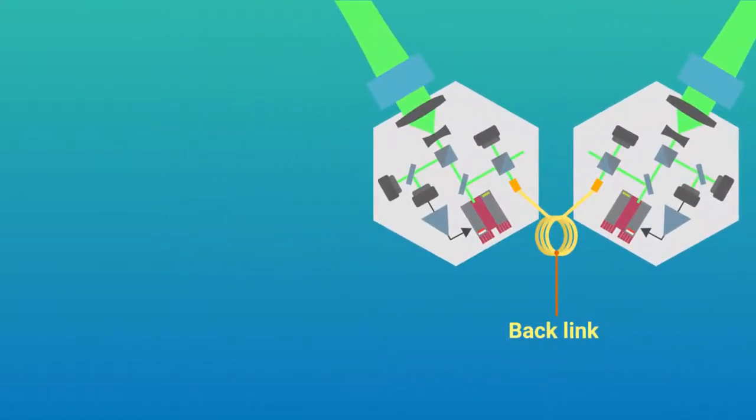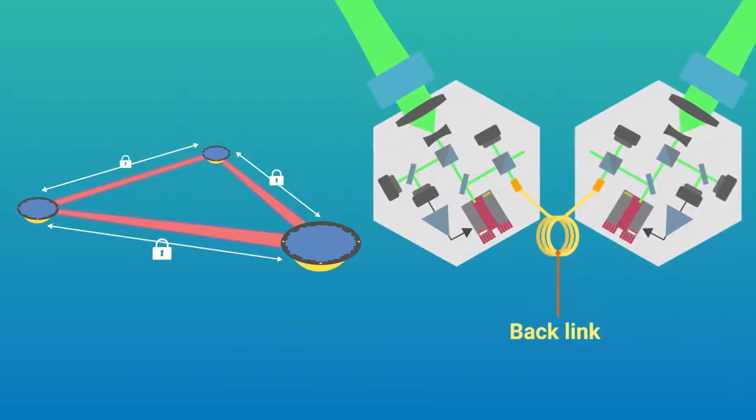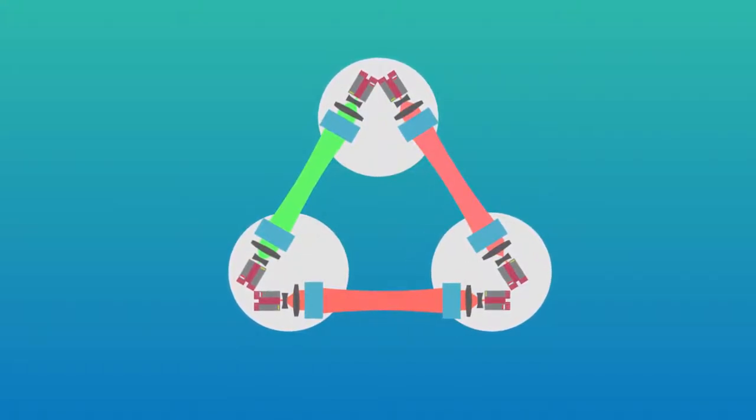Whereas conventional Fabry-Perot interferometers have to precisely maintain the distances between spacecrafts to ensure the cavities are at resonance, the proposed topology can do so by simply adjusting each laser's frequency through the backlink.